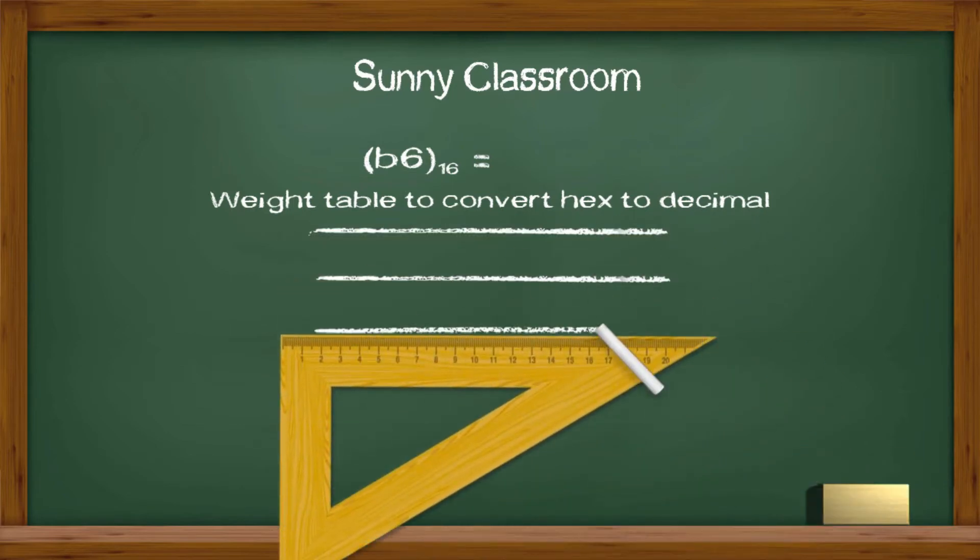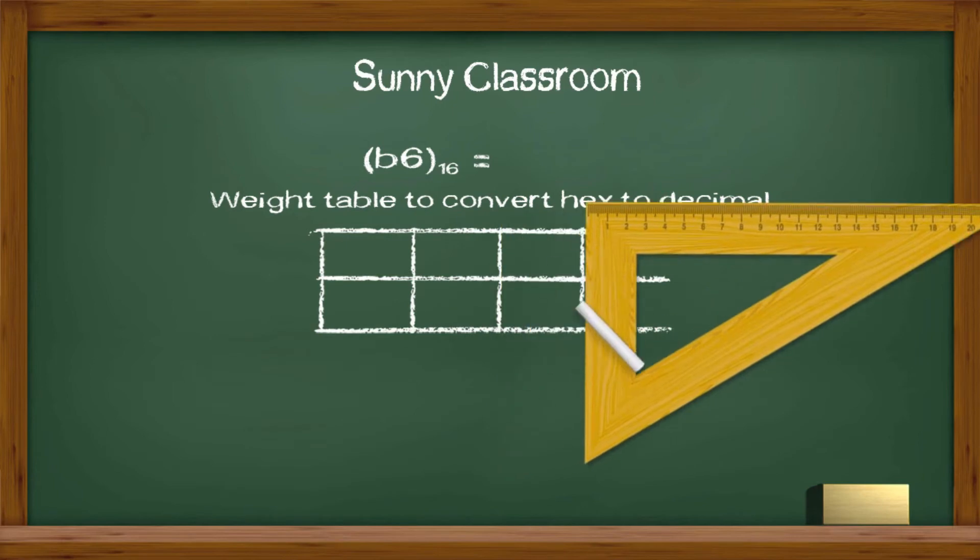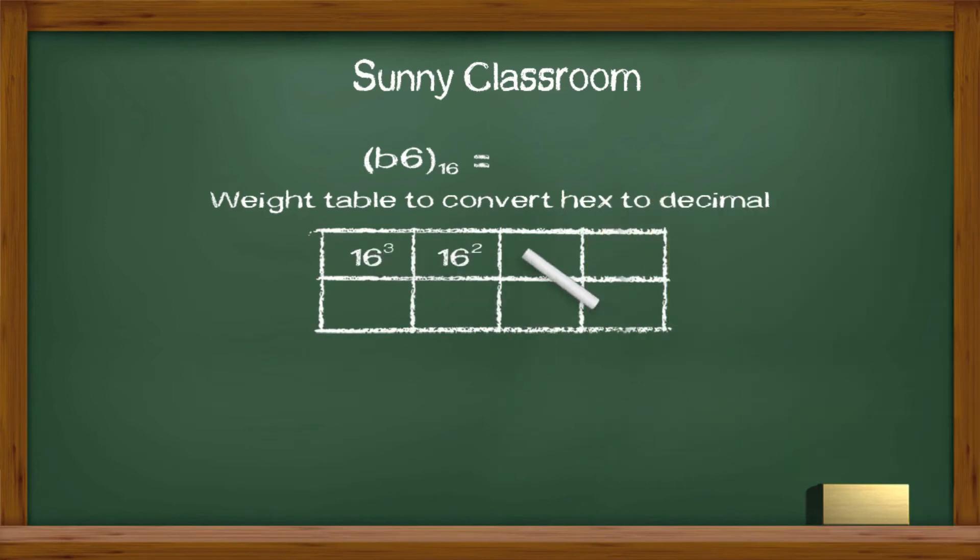Hex is a positional number system. Each position has some powers of 16. We write down B and 6 on the table matching their positions.